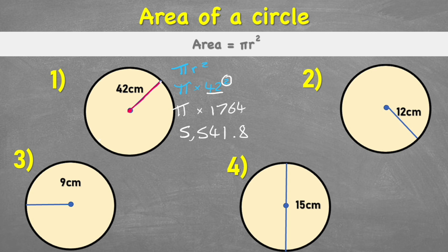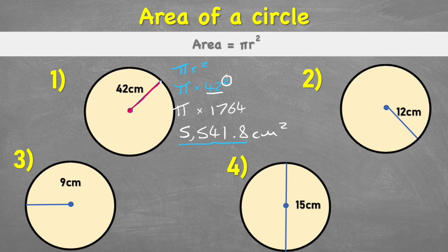Then multiply by pi, giving 5541.8. Alternatively, on the calculator press pi times 42 and then press the squared button — the x² button — before pressing equals, which gives the same answer. What you must not do is press pi times 42 equals and then square. The circumference for this first circle is 5541.8 centimeters squared.